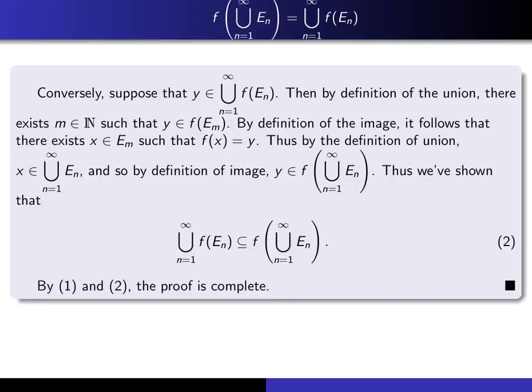But to say that Y is in the image of E sub M is to say that there exists an X in E sub M such that Y is equal to that F of X. But if X is in E sub M, then it must be in the union of all of the E's, because it's in at least one of them. And Y is F of such a thing, and therefore Y must be in the image of the union.